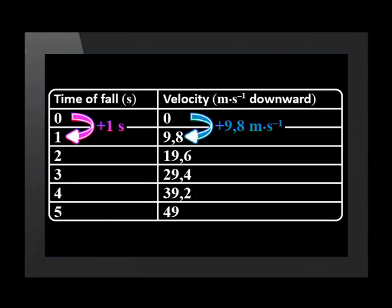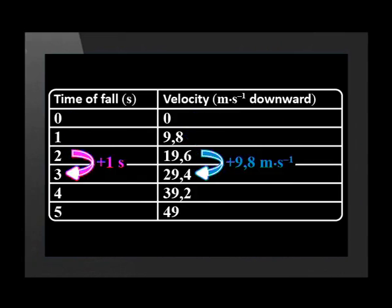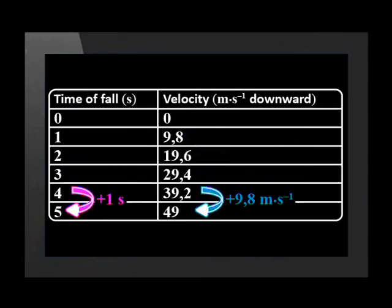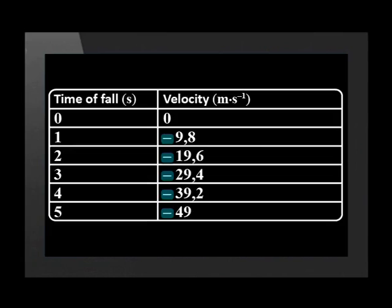The velocity of the ball increases by 9.8 meters per second downward each second. Since the ball is moving downward, its velocity is downward. We often use a negative sign for the downward direction.